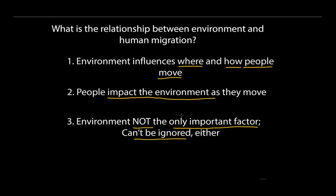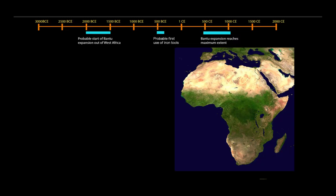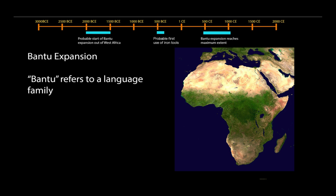With those bigger points in mind, let's start by looking at a specific example in Africa known as the Bantu migration, or more often the Bantu expansion into sub-Saharan Africa. When I say sub-Saharan Africa, that's the region of Africa that is south of the Sahara Desert, and I'll shade that in here so you can see where I'm talking about.